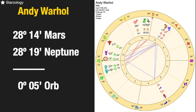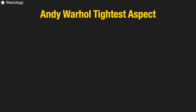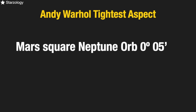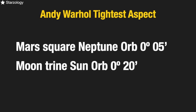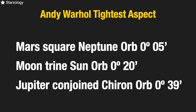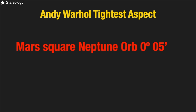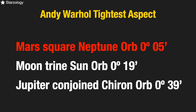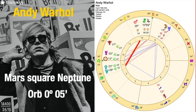Having gone through our three pairs, we now take it down to the minutes to work out the exact orb between the two planets. Looking at those three all in order, we can see that for Andy Warhol, his tightest aspect is Mars square Neptune at zero degrees five minutes. Second up is the Moon trine Sun with an orb of zero degrees 20 minutes. Third is Jupiter conjunct Chiron with an orb of zero degrees 39 minutes. There is only one tightest aspect, and in his chart it's Mars square Neptune — you can see it quite clearly there.